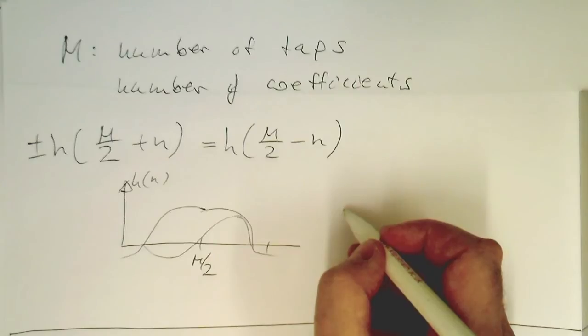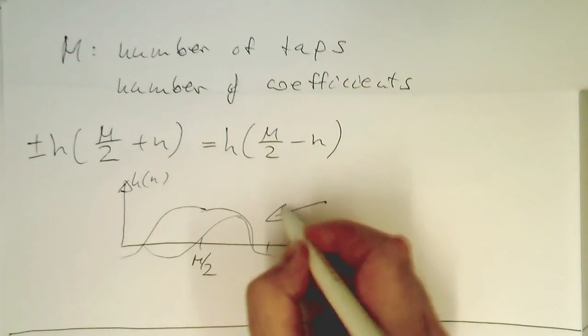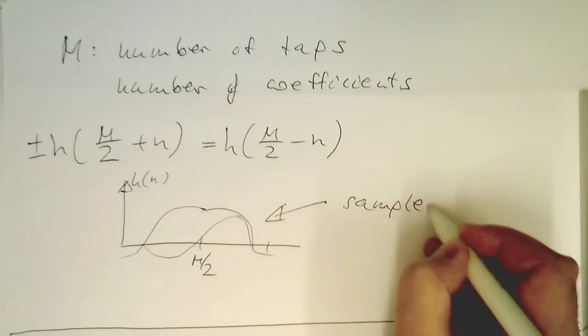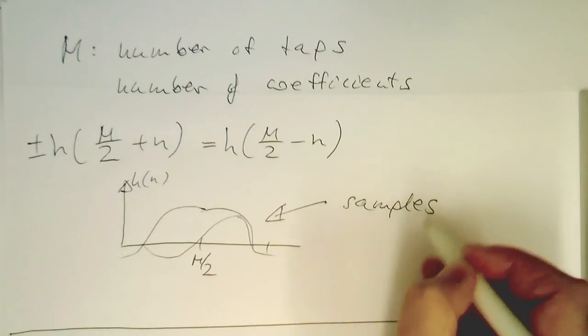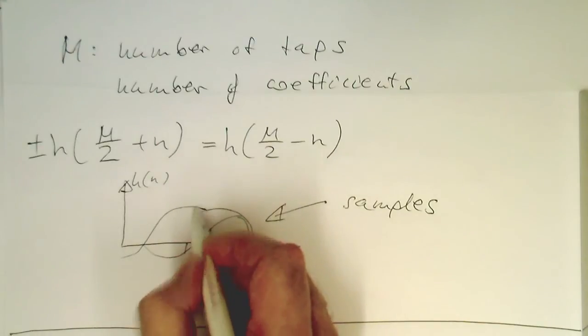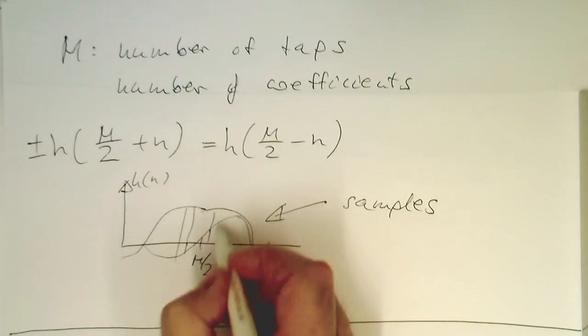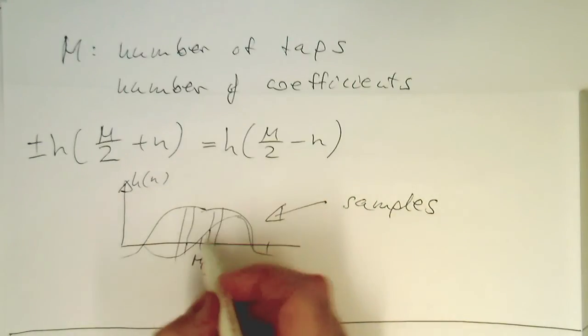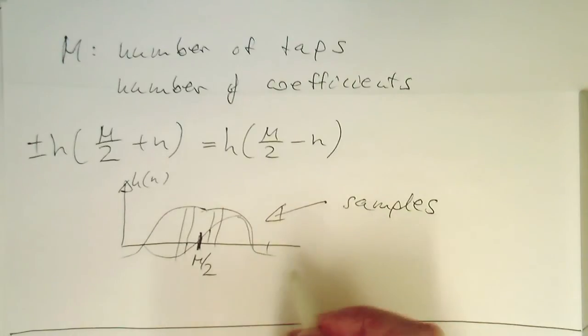So now this is not the full story because these are actually samples here, so these are not continuous values here, but we have samples. So single values here, for example, here, or also here. So that we just sample the system. So now a problem arises, not a problem, but what do we do here at the midpoint? So how do we treat our symmetry at the midpoint here?